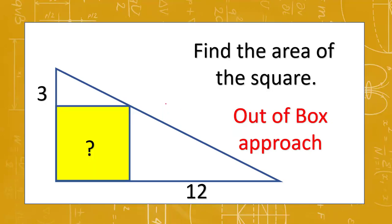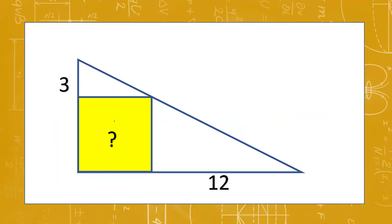Hello friends. In today's video we will learn an application of the concept of similarity. In this particular figure, we have a right angle triangle which contains a square such that two sides of the square coincide with the two perpendicular sides of the right angle triangle, and one vertex lies on the hypotenuse. We have to find out the area of this square.